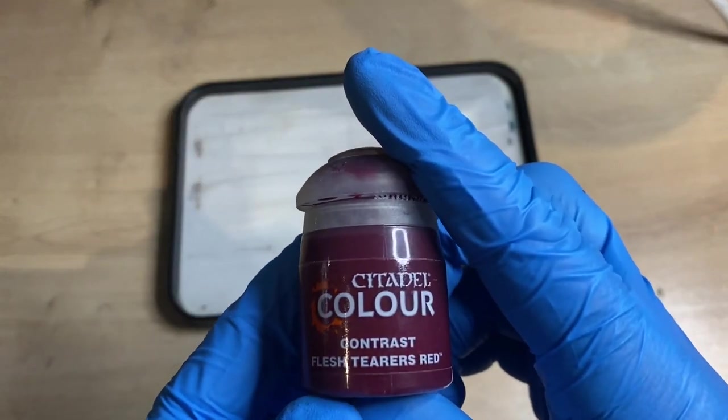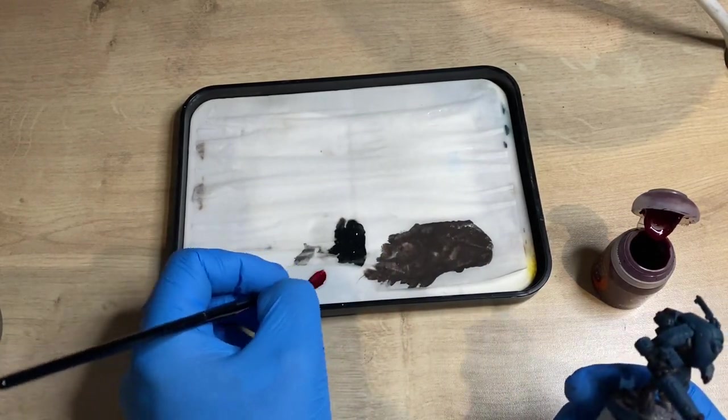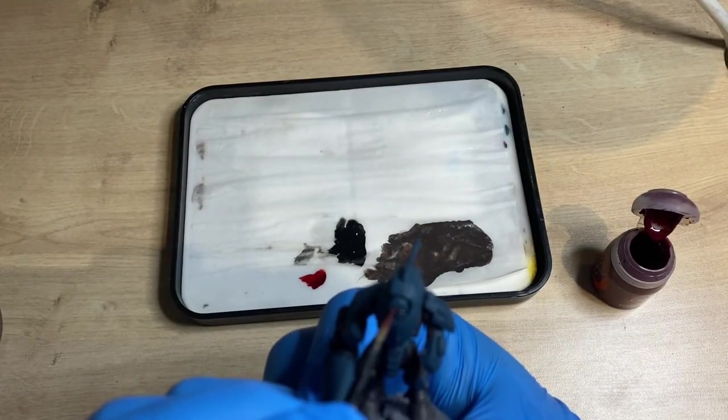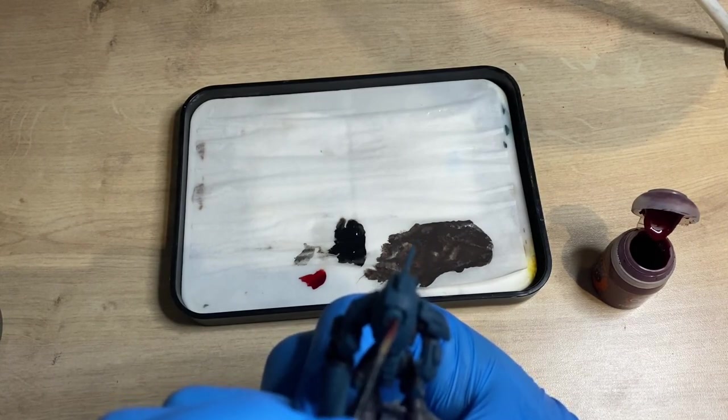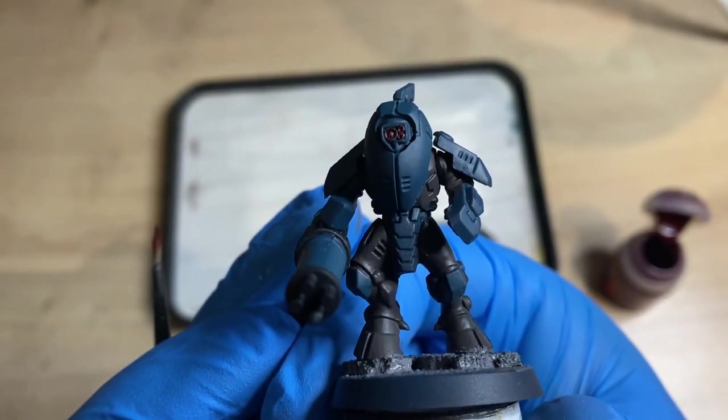The next paint you'll need is Flesh Tearers Red. Now I'm going to use this to dot in the eye lenses and give it a bit of characterful detail in the face area, but you can substitute this out to whatever color you'd like. I'd recommend doing a metallic contrast over the top—it just gives it a different look and feel—but you do you.